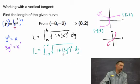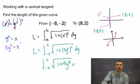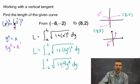And I don't have a problem if you want to go ahead and punch this in on a calculator. If you want to simplify the radical a little bit, you can do that as well. So it's going to be negative two to two of the radical 1 plus 9y to the fourth dy.